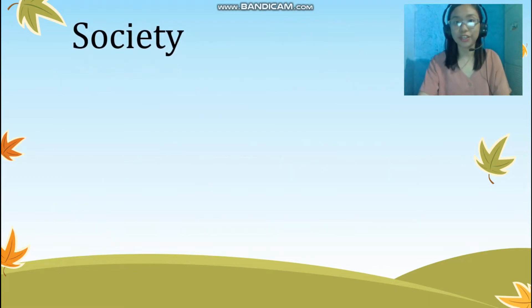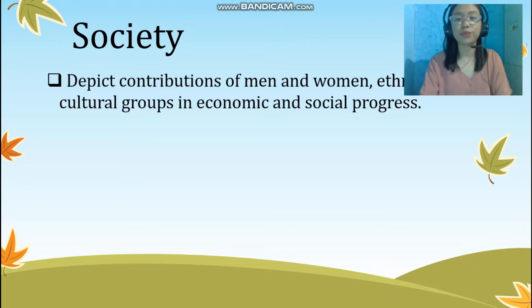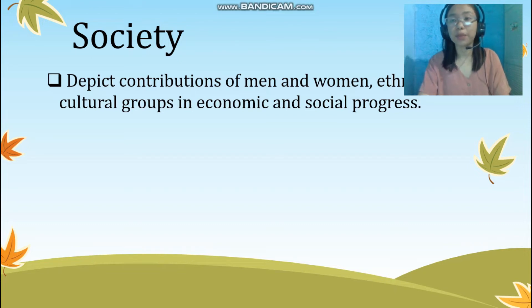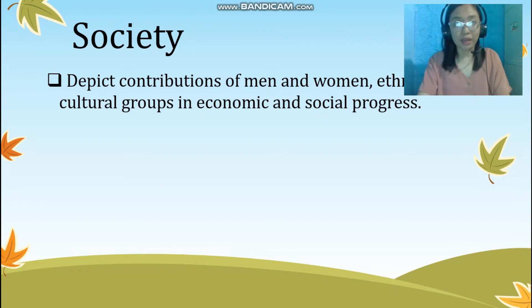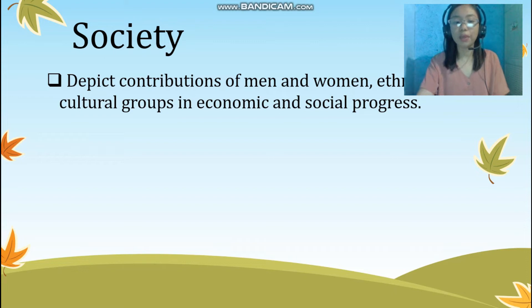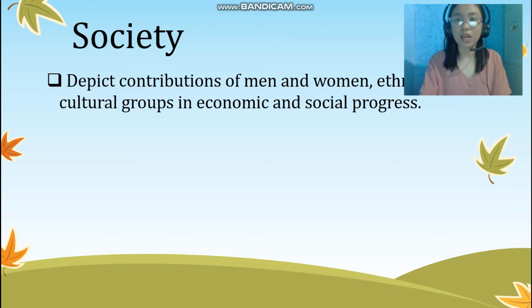The next theme is society, and there are 12 guidelines under it. The first one is depict contributions of men and women, ethnic and cultural groups, and economic and social progress. We need to show in our learning activities the contributions of both women and men, various ethnic groups, and various sectors to the growth of our economy and society, including the important roles they have played to bring about progress in our country, such as ethnic groups known for their preserved culture, traditions, and creativity.